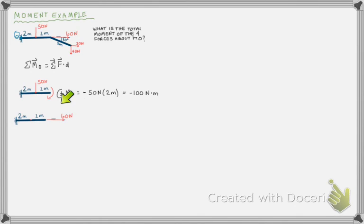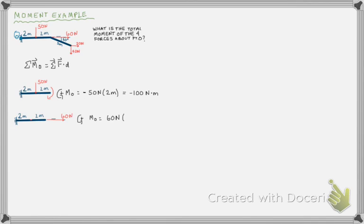Now let's take a look at the 60 Newton force coming straight out from the bar. Following the equation, the moment about point O — where counterclockwise is positive — is 60 Newtons multiplied by the perpendicular distance between the line of action of that force and point O. It should become clear pretty quickly that there is no perpendicular distance between the line of action of this force and that point. So the 60 Newton force does not create a moment about point O.